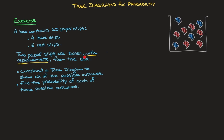In probability, when we read WITH REPLACEMENT, it gives us some information about how we're going to pick the two paper slips from this box. Imagine not being able to see what's inside the box and taking one paper slip. You look at its color — either blue or red — and then put it back inside the box. Once that's done, you pick the second paper slip, which again will either be blue or red. The words WITH REPLACEMENT tell us we put the first paper slip back before picking the second one, and it's very important to note that, as it will affect the actual probabilities.